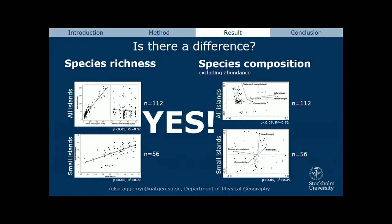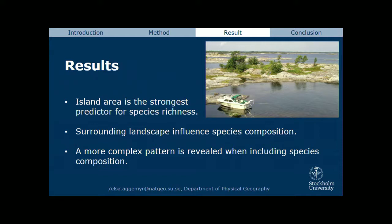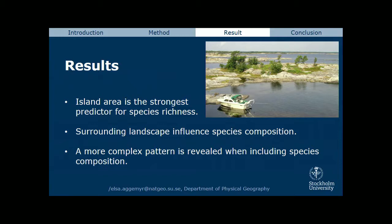Results: island area is the strongest predictor for species richness. When looking at species composition, the surrounding landscape is clearly of importance for which species you find on the islands. A more complex pattern is revealed when including species composition.